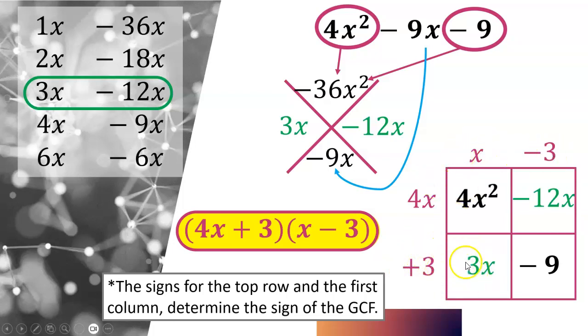So again, if this 3 had been negative, then we'd put a -3 out here. Or because this 12x is negative is why we have a negative out here. So this term in the bottom right corner doesn't determine the sign on the outside. It's when we look at this top row and this first column, those pieces are what determine the signs of the greatest common factor. So that's the one thing to remember when using this method. But otherwise, that is how you factor using the Xbox method.